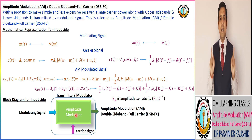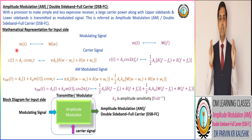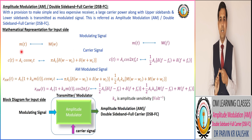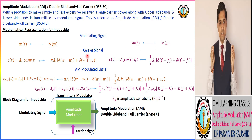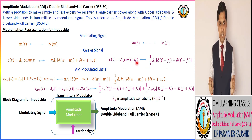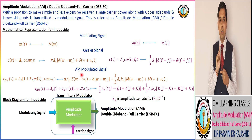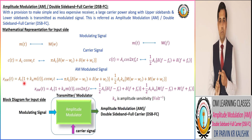As per the mathematical representation, the modulating signal is denoted as m(t). In the frequency domain it is represented as M(ω). The carrier signal c(t) is expressed as Ac cos(ωc·t) or Ac cos(2π·fc·t), with its frequency domain representation as C(ω). The amplitude modulated signal is equivalent to Ac [1 + ka·m(t)] cos(ωc·t).